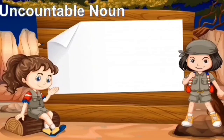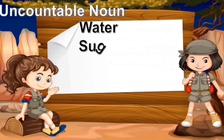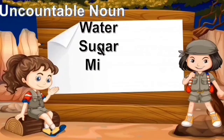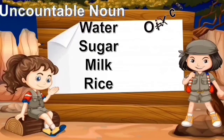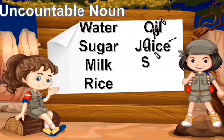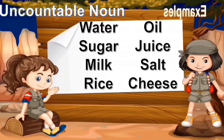The examples of uncountable nouns are — contoh dari kata benda yang tidak bisa dihitung satuan adalah: water, sugar, milk, rice, oil, juice, salt, and cheese.